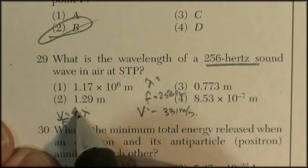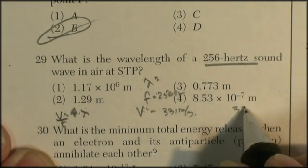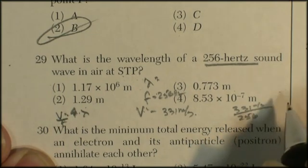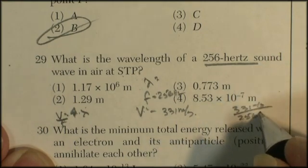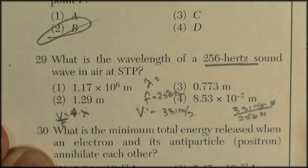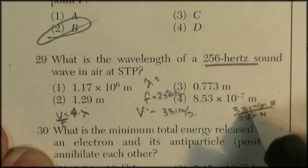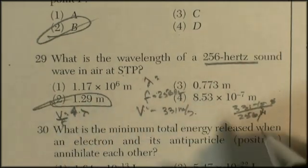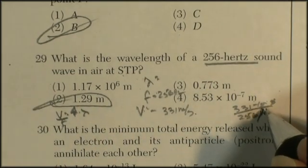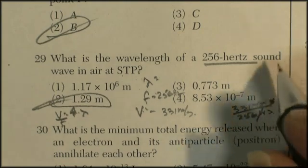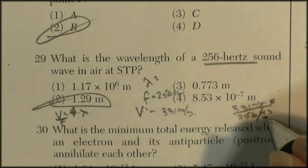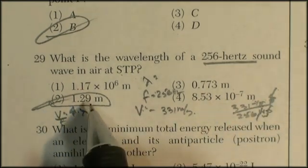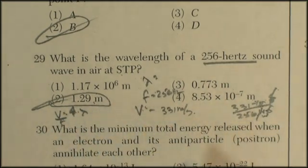Divide both sides by frequency. I've got 331 meters per second divided by 256 waves per second. It's going to be 331 divided by 256, so I'm getting one point something. The units are meters per second, frequency is waves per second - seconds cancel, we're left with meters per wave. The wavelength is 1.29 meters per wave.